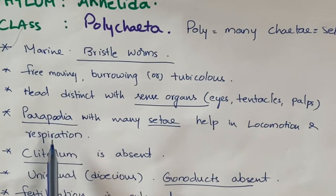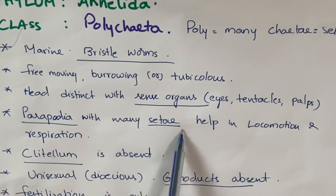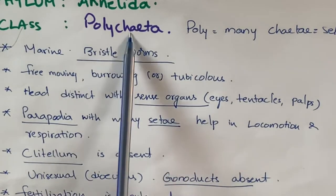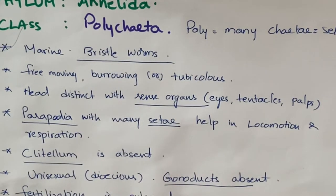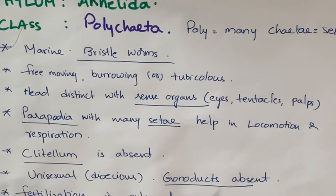Each parapodia contains numerous setae — that's why the name Polychaeta. Next, the clitellum, which is a characteristic feature of annelids, is absent in Polychaeta. These animals are unisexual animals, and gonoducts are absent.